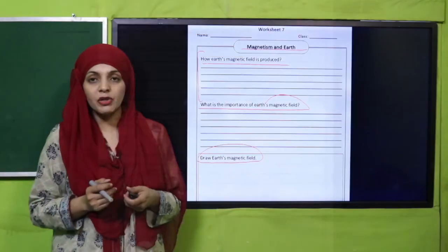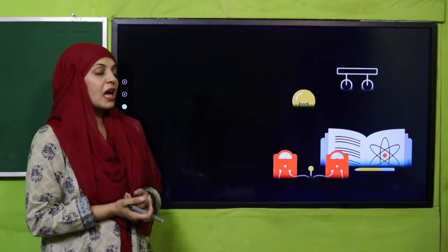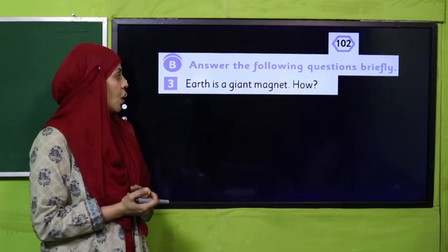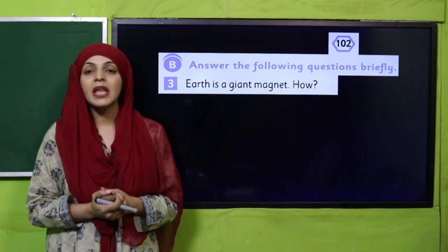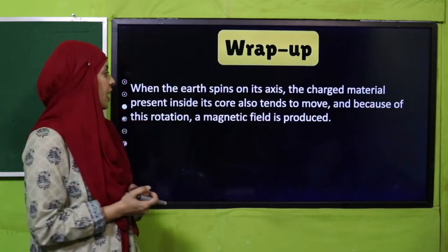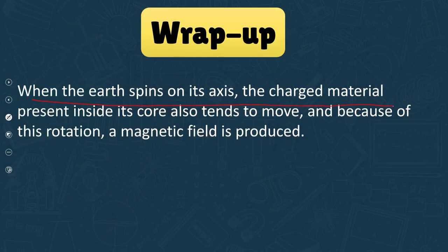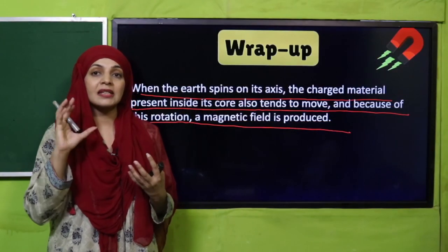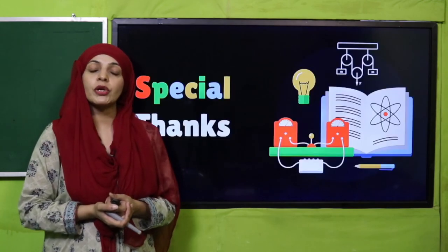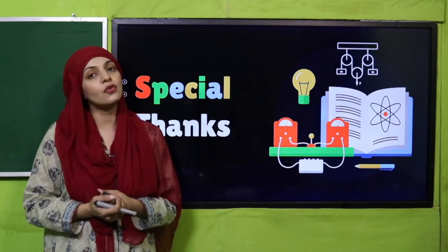For homework, do Question Number Three from Exercise B given on Page Number 102: 'Earth is a giant magnet — how?' Write about this in your notebooks; you can also take help from the book. In today's lecture we have learned that when the Earth spins on its axis, the charged material present inside its core also tends to move, and because of this rotation a magnetic field is produced. Earth's magnetic field is very important, generated due to the spinning of the Earth on its own axis and the movement of molten iron. I hope you enjoyed today's lecture. Keep everybody around you safe, have a good day. Thank you so much and Allah Hafiz.